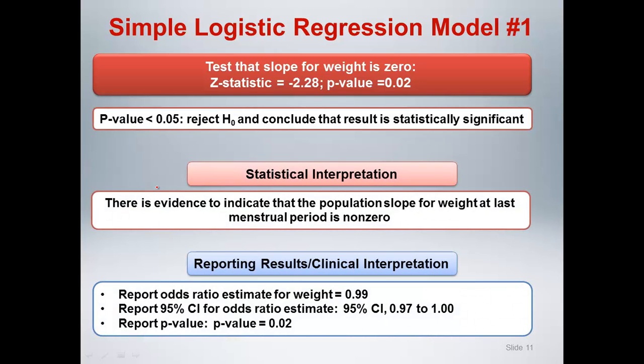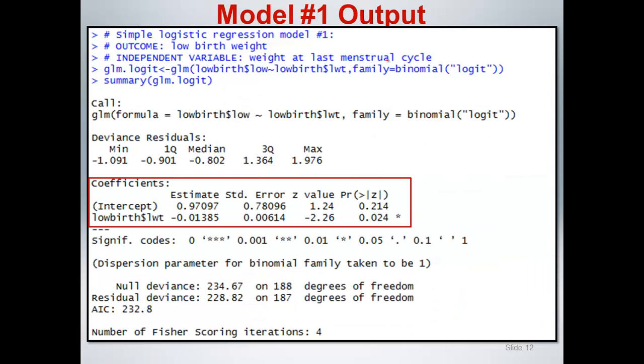Here's the frequency table showing that there were 115 who did not smoke during pregnancy, 74 who did. Among those who smoked during pregnancy, 30 were below normal, 44 were normal. So those are summary statistics. So now let's go and look at the results of the first logistic regression model looking at the relationship between weight at last menstrual period and low birth weight. And this is the result we saw from the previous presentation. And so what we really want to focus on is we want to show how to replicate these statistics.